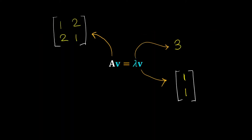Now we know how to calculate eigenvalues and eigenvectors. But what is the geometric meaning of this eigenvalue-eigenvector relationship?